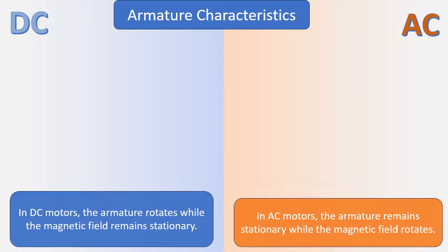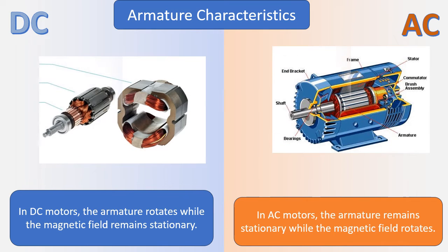Armature characteristics: In AC motors, the armature remains stationary while the magnetic field rotates. In DC motors, the armature rotates while the magnetic field remains stationary.